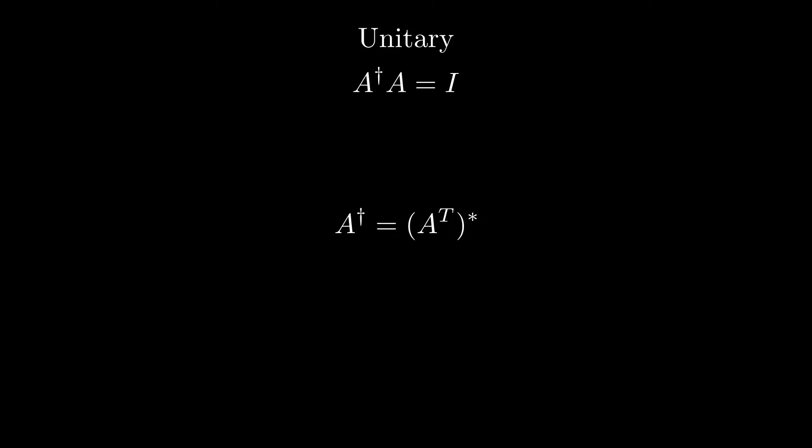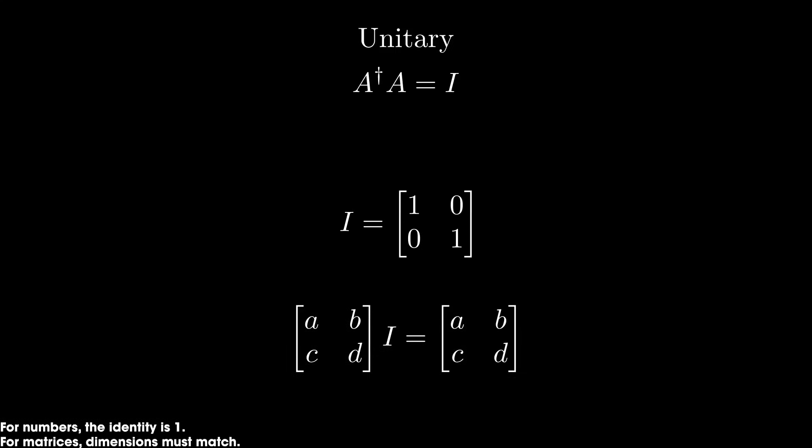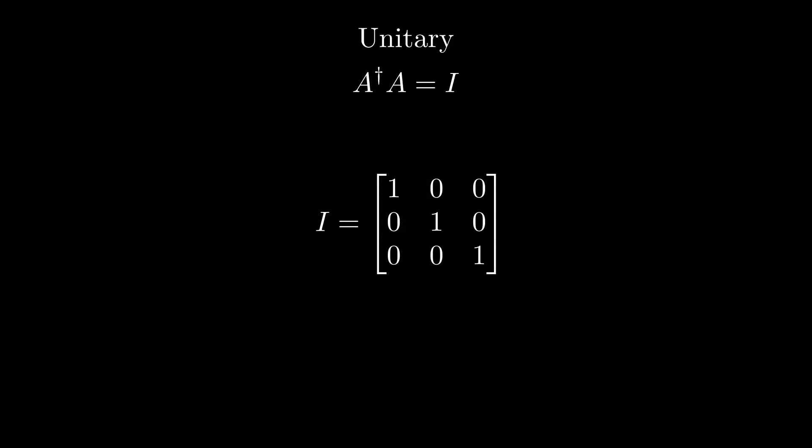Well, this asterisk means to take the complex conjugate. And all that means is if we have a complex number, we flip the sign. 2i becomes negative 2i. If we have real numbers, which is what we're working with so far, then we just don't do anything. So back to the definition of a unitary matrix. This i over here is just the identity matrix. Any matrix, or even any number, times the identity matrix is just itself again. For larger matrices, it's just zeros in all entries with ones in the diagonal.